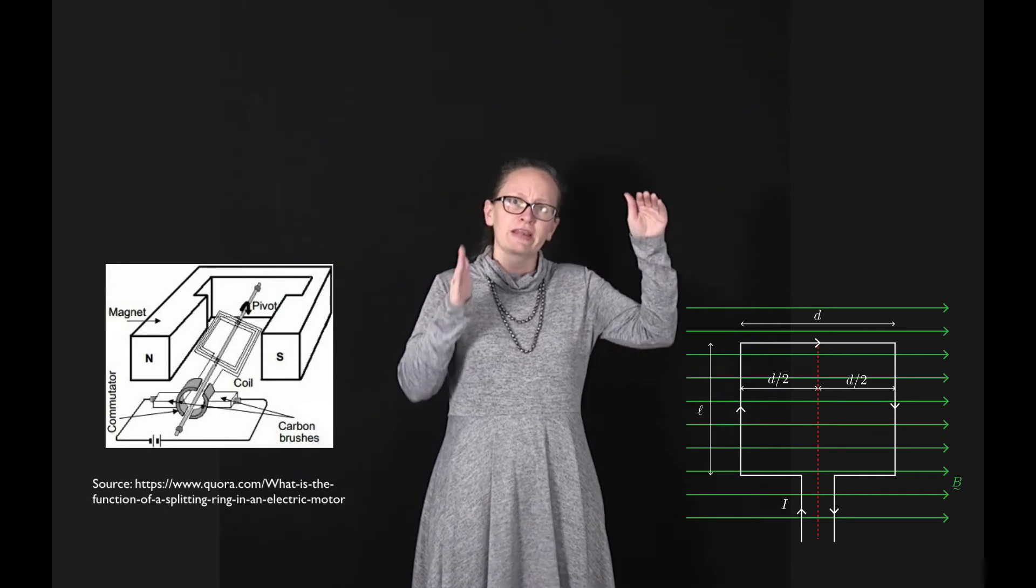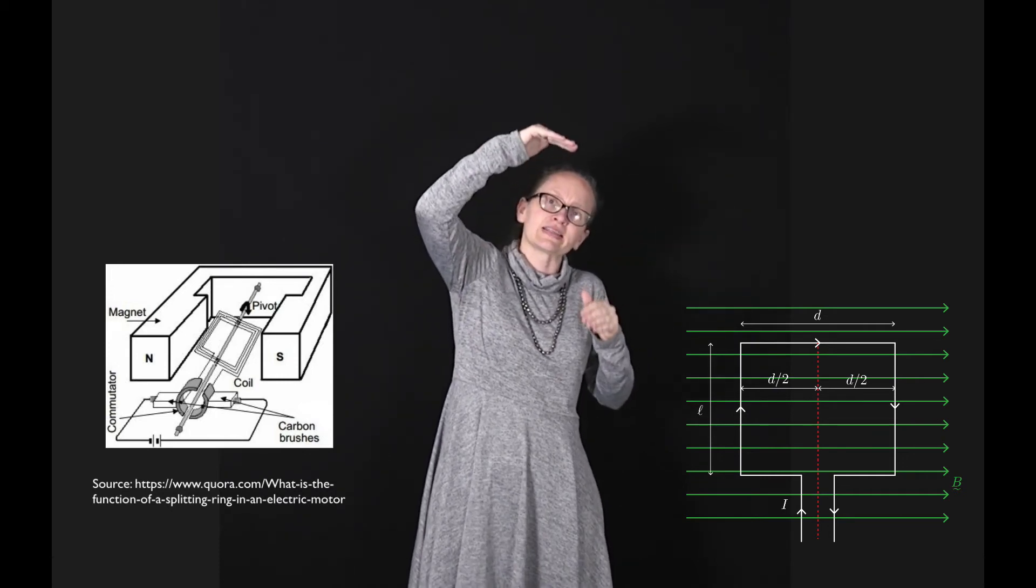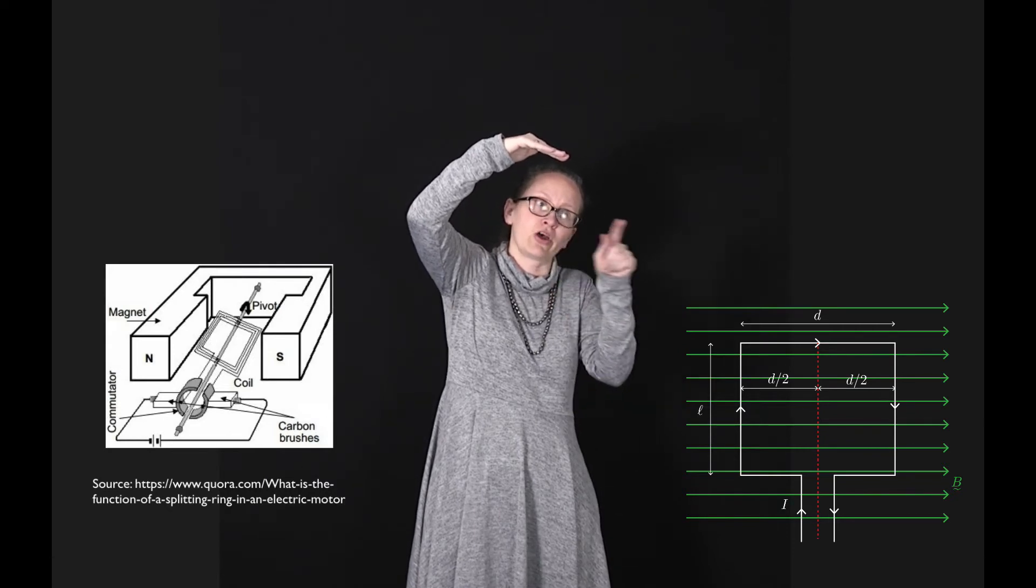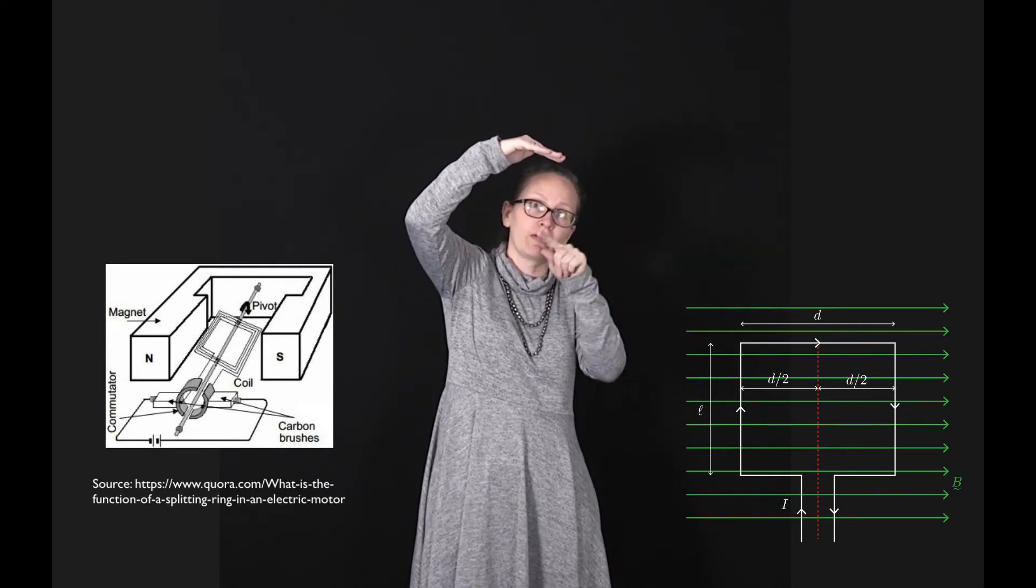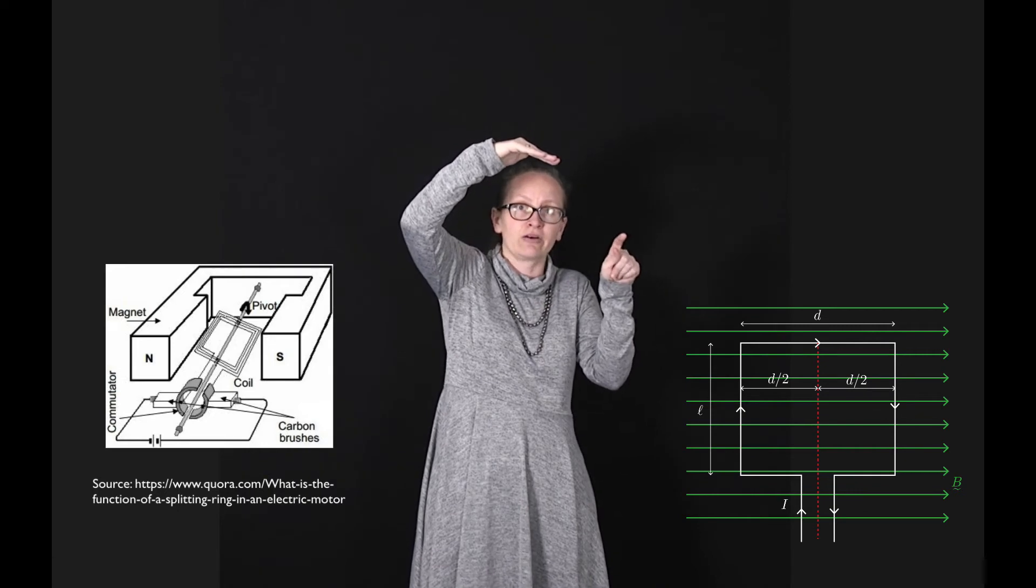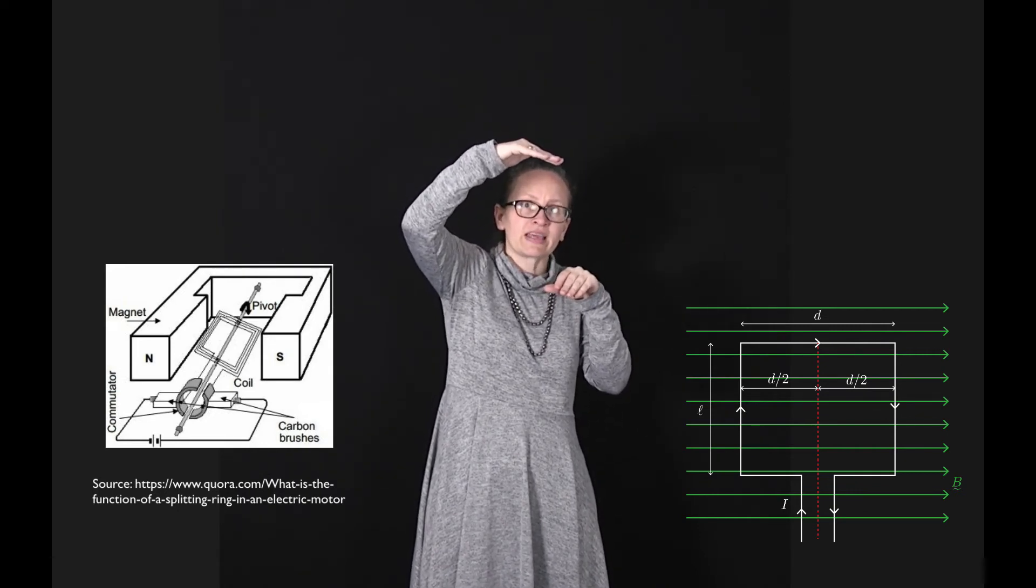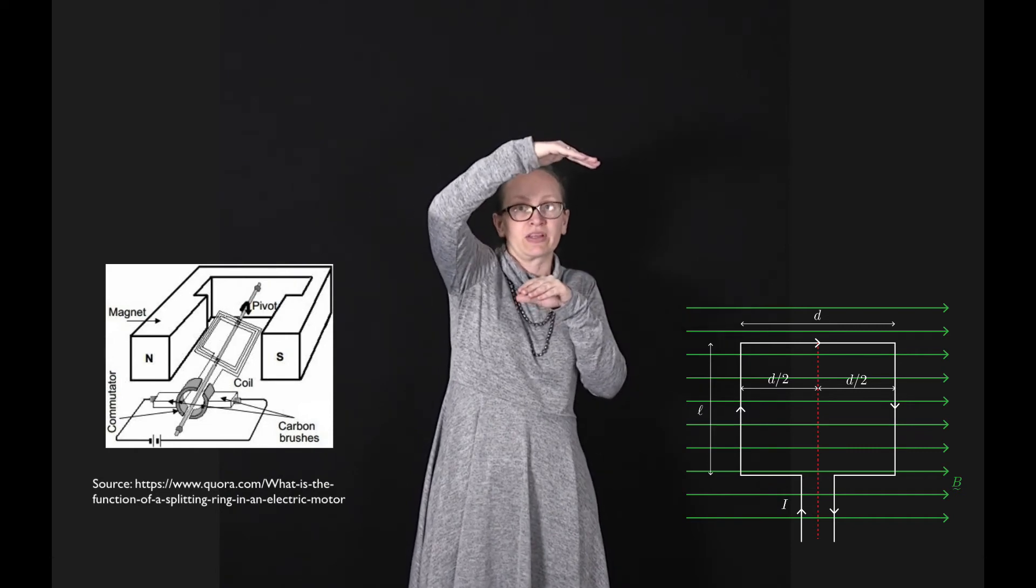If we imagine that torque acting, the coil is going to get to the place where the normal to the loop is parallel to the magnetic field. At that point there's not going to be any torque acting upon it.